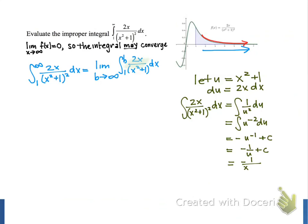Next we can put this back in terms of the original variable x to get negative 1 over x squared plus 1 plus c.